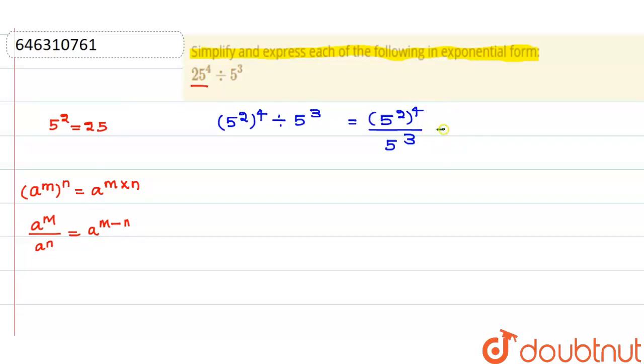So these two properties we need to apply here. So this is 5 to the power of 8 upon 5 to the power of 3. And if you apply this property, that is 5 to the power of 8 minus 3, which equals 5 to the power of 5.